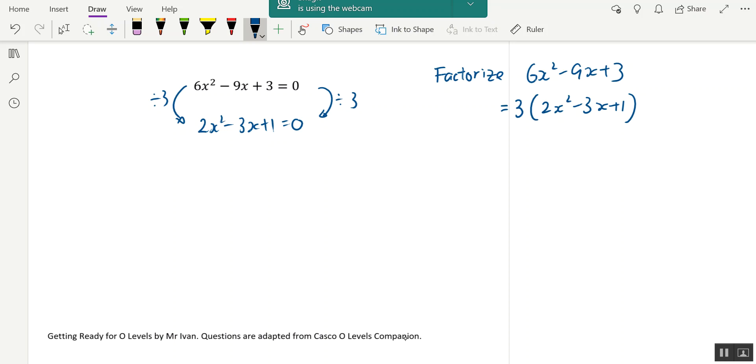So once you take away the 3, you can either do your cross-factorization or multiplication frame. Because most textbooks are now using multiplication frame already, we will use multiplication frame as well. The multiply is here. So first one, 2x² is here and then positive 1 is here.